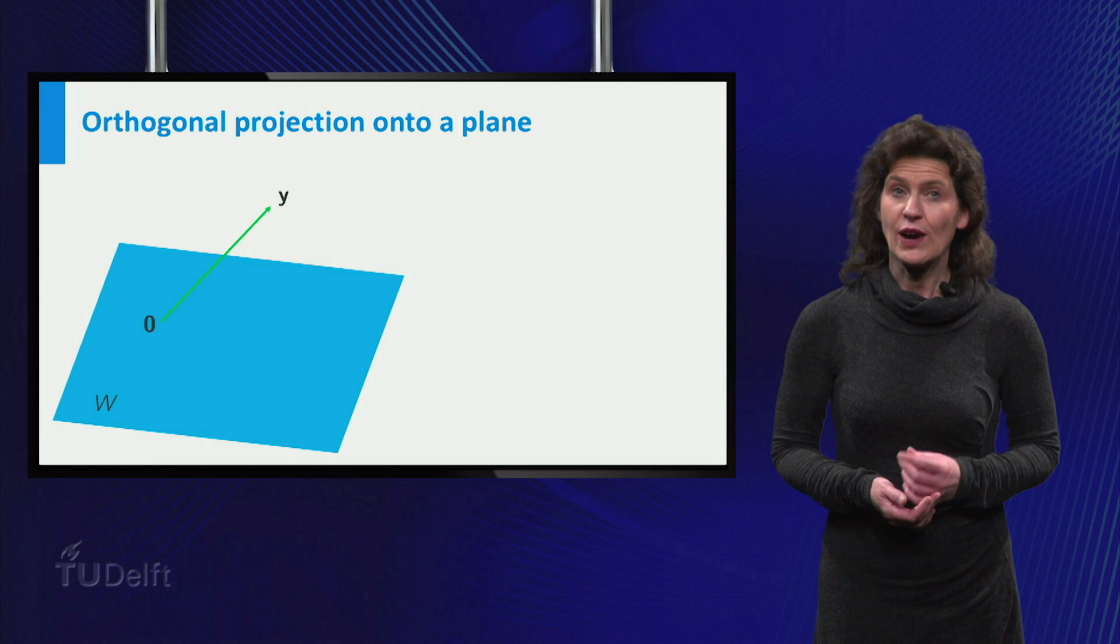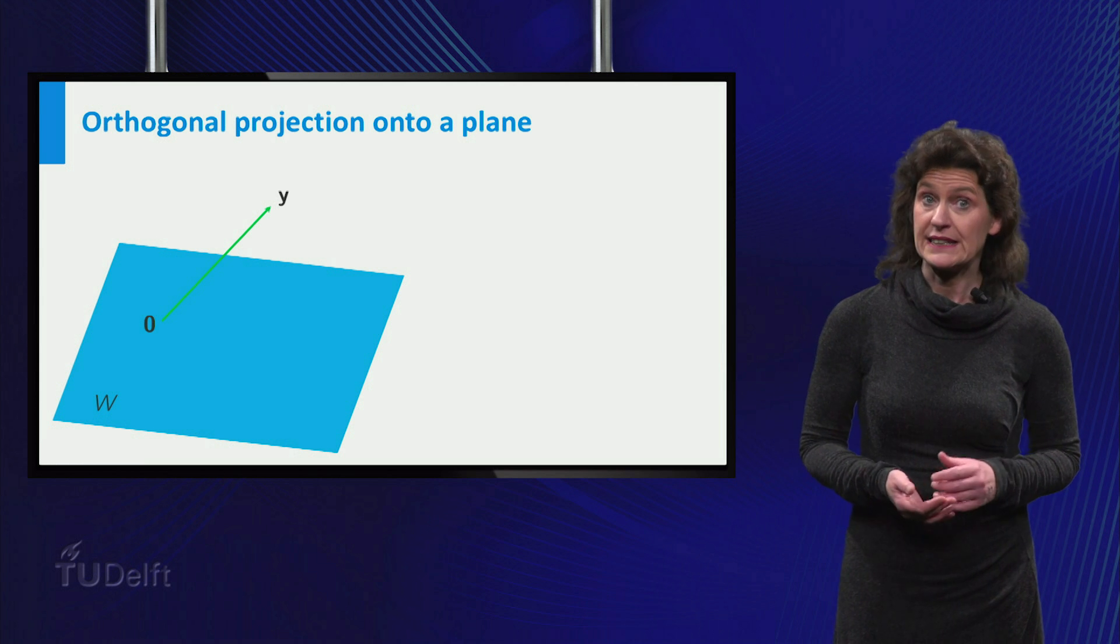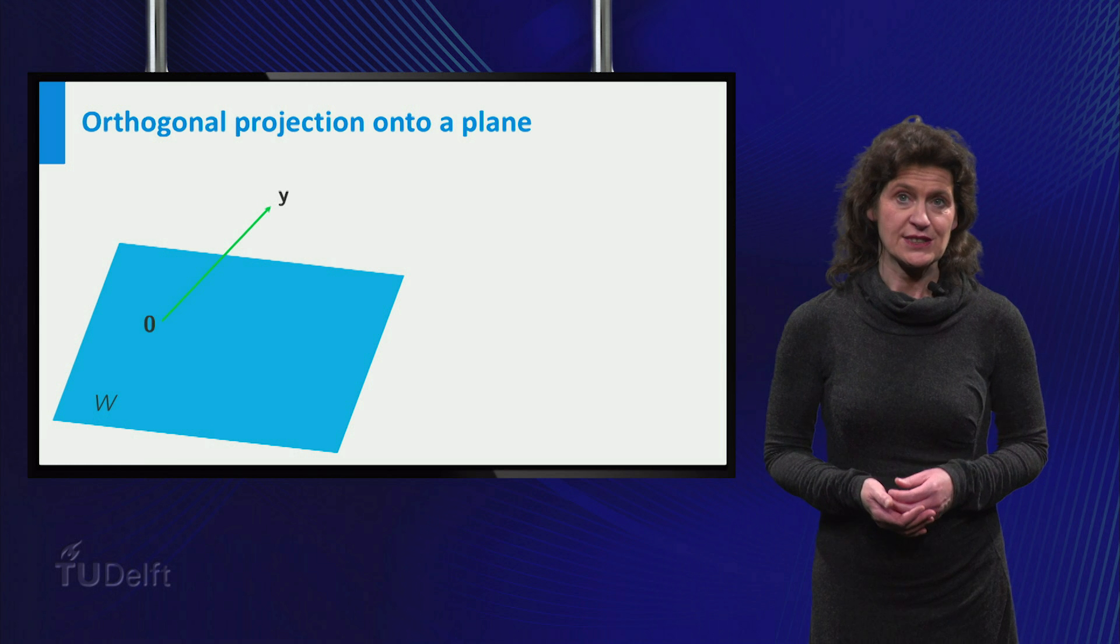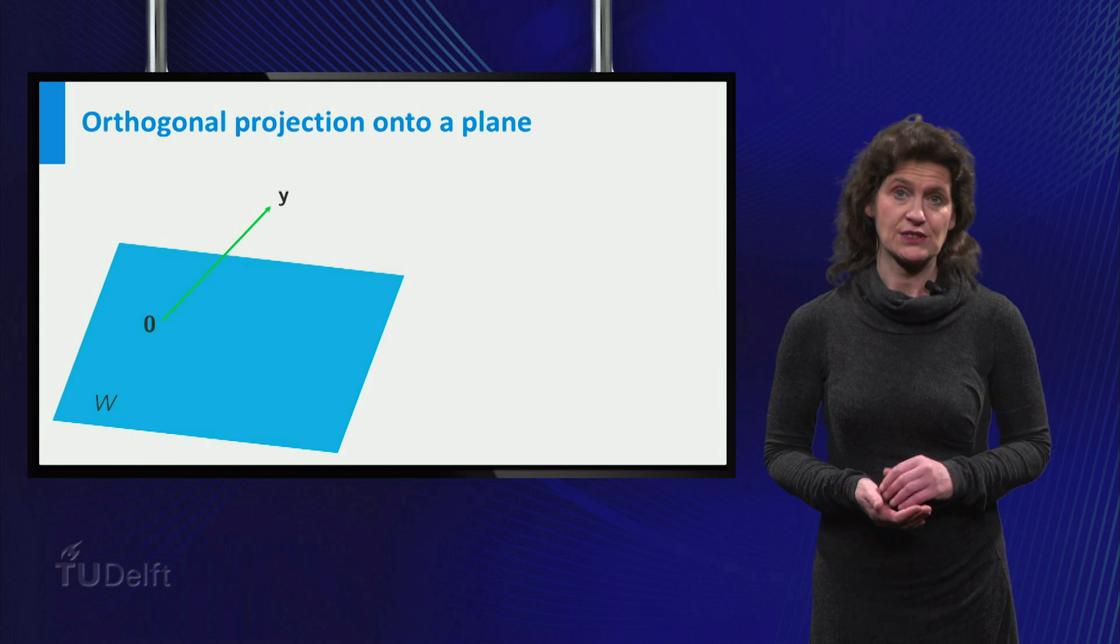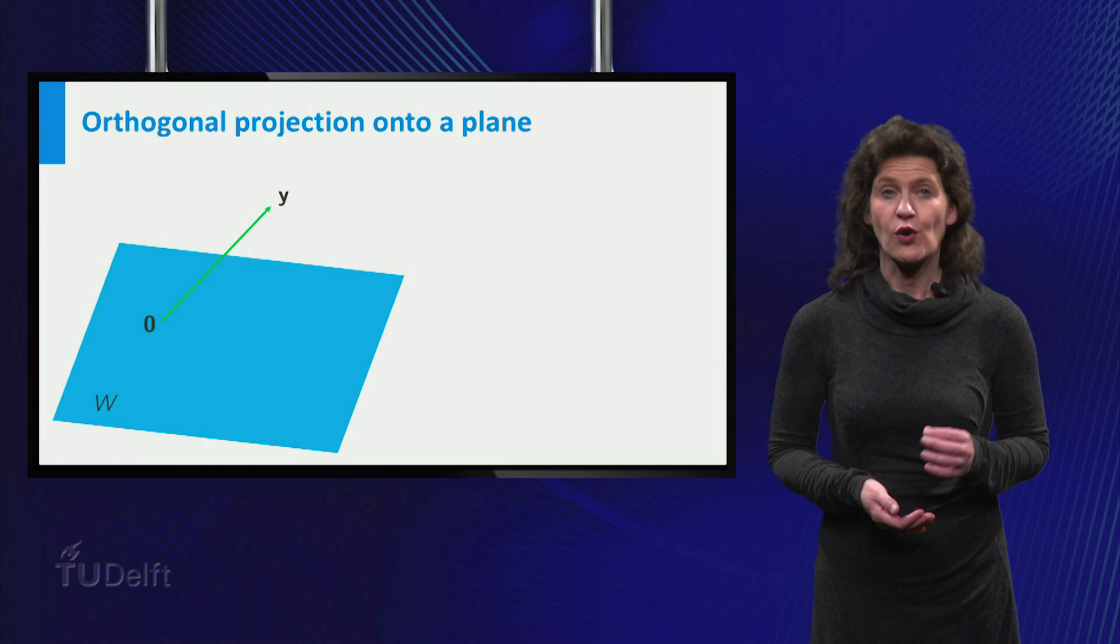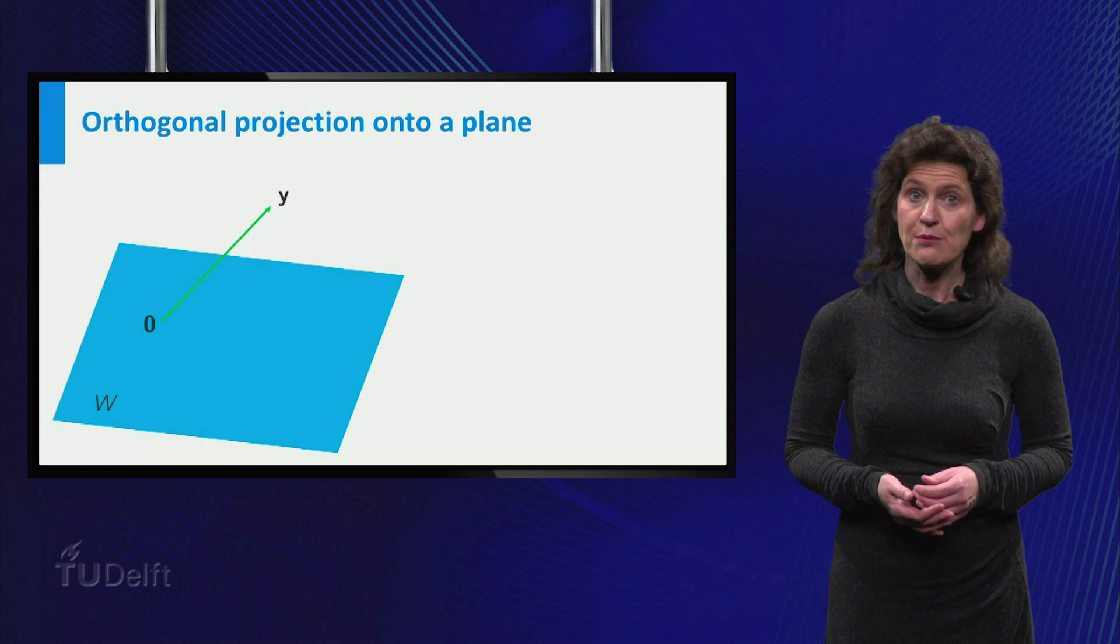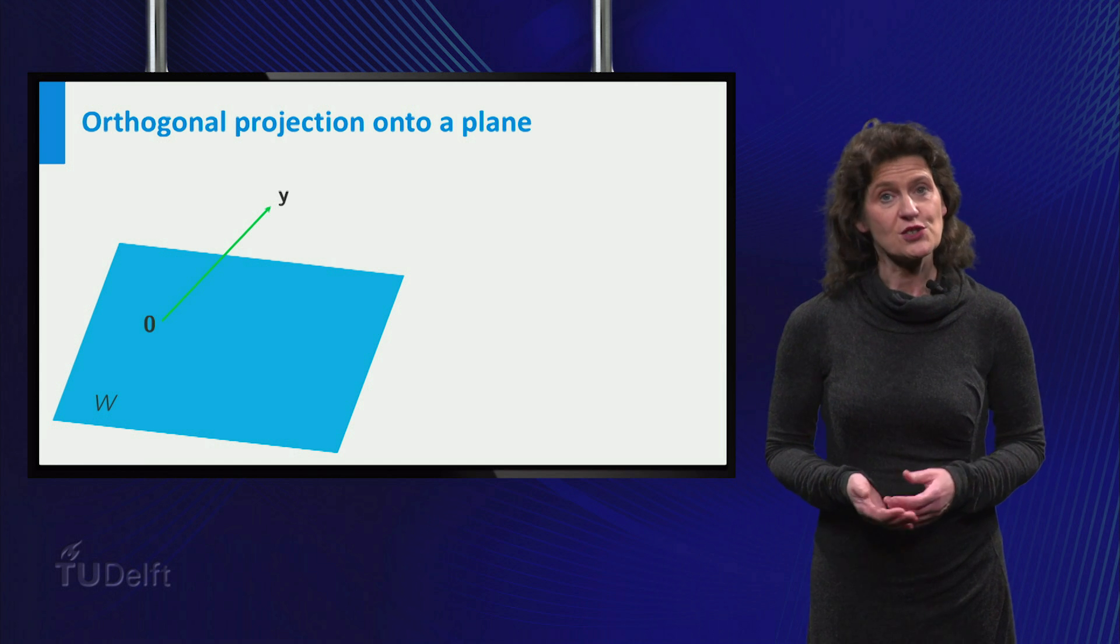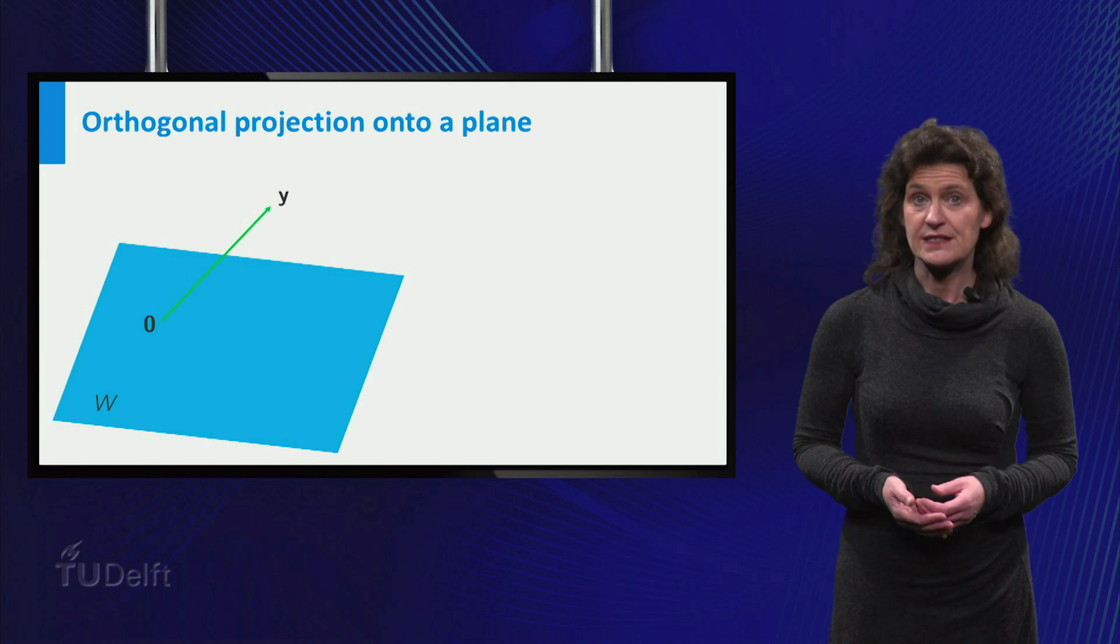Before we continue, you have to recall some facts about planes and bases. You remember that a plane through the origin is spanned by two independent vectors in the plane. In other words, the plane W consists of all linear combinations of any pair of linearly independent vectors in W. Such a pair of vectors is called a basis for the plane.